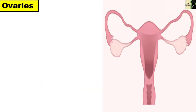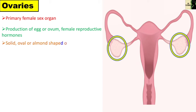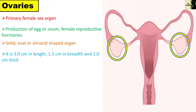Now let's talk about ovaries. It is the primary female sex organ. Its main function is production of egg or ovum and the female reproductive hormones. It is a solid oval or almond-shaped organ, 3 cm in length, 1.5 cm in breadth and 1 cm thick. It is located in the upper lateral part of the pelvis near the kidneys. Each ovary is held in position by ligaments, attaching it to the uterus and the abdominal wall. The ovarian ligament attaches the ovary to the uterus.